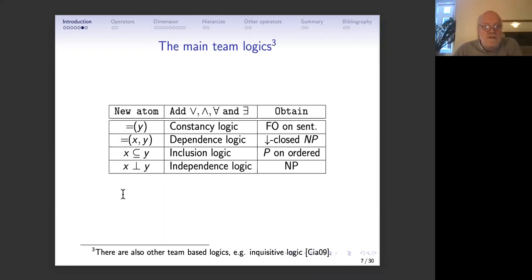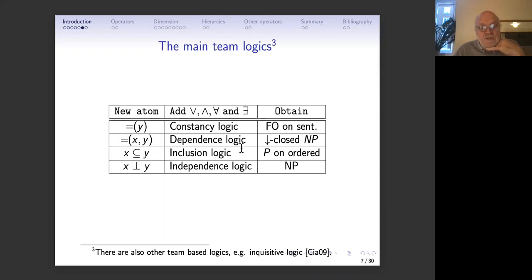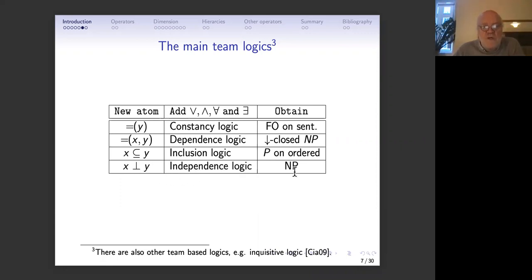The main team logics studied are: constancy logic, where we add constancy atoms to first-order logic — this is first-order on sentences but not on formulas; dependence logic, where we add dependence atoms, which corresponds exactly to downward-closed NP; inclusion logic, which is exactly P-time on finite models due to connection to fixed-point logic; and independence logic, which turns out to be exactly existential second-order logic on finite models and indeed on all models.